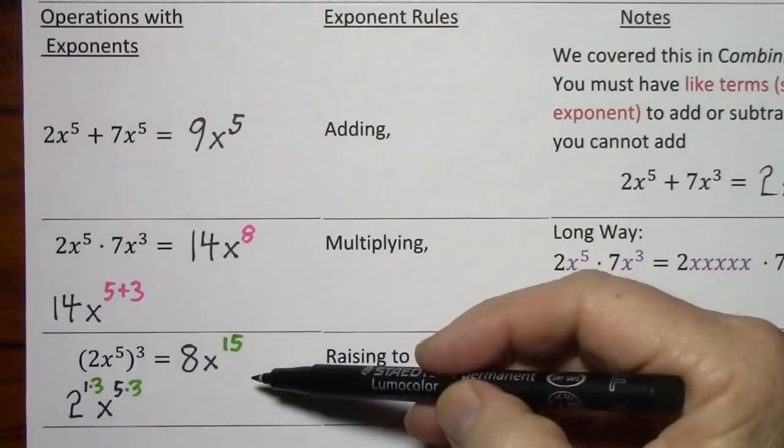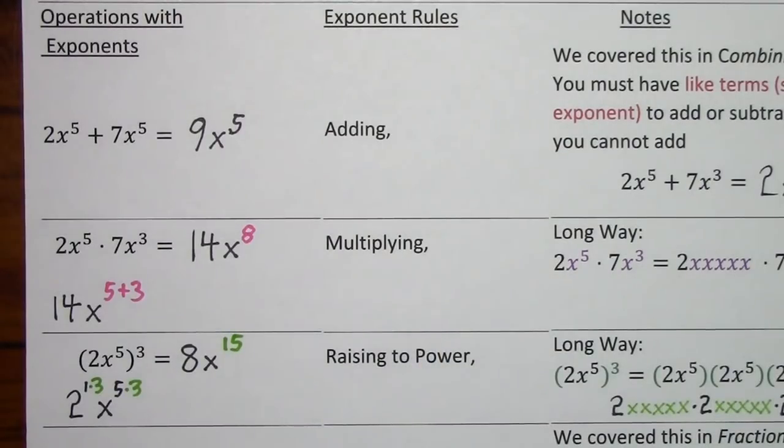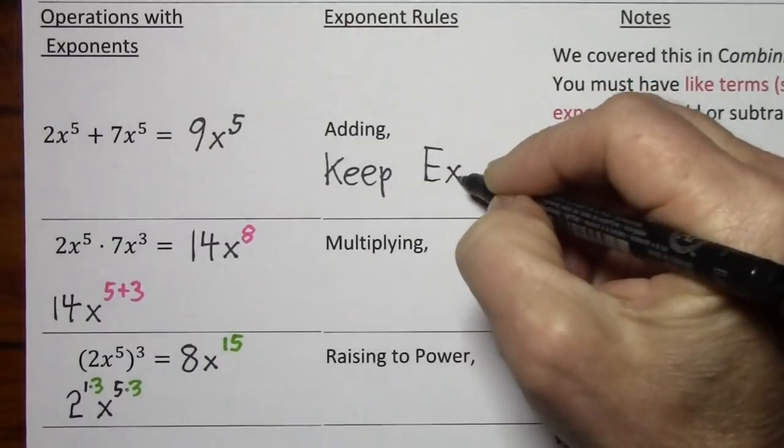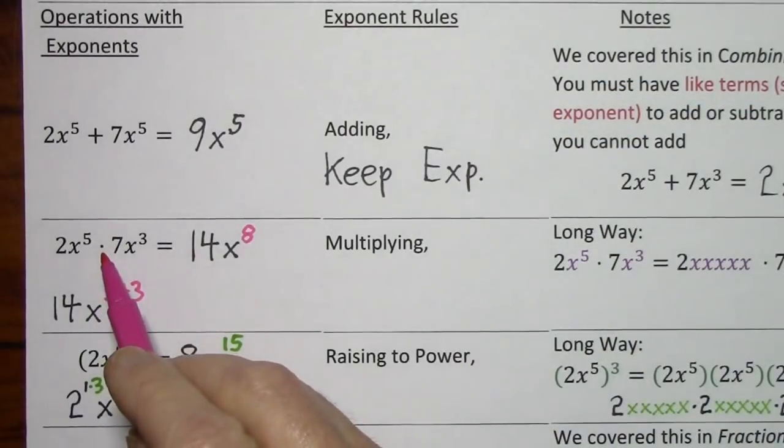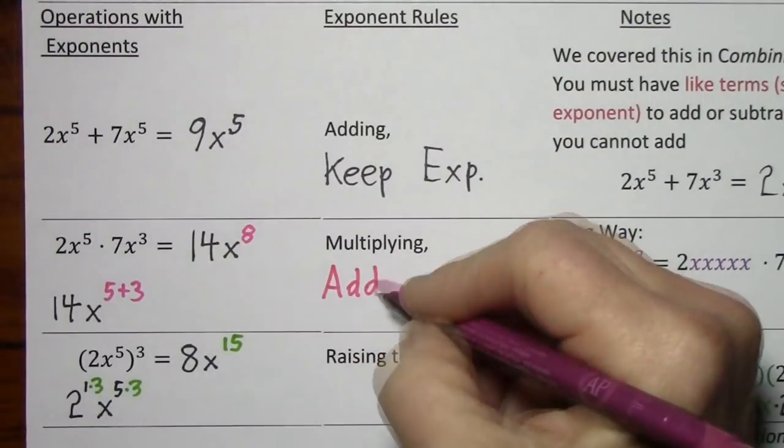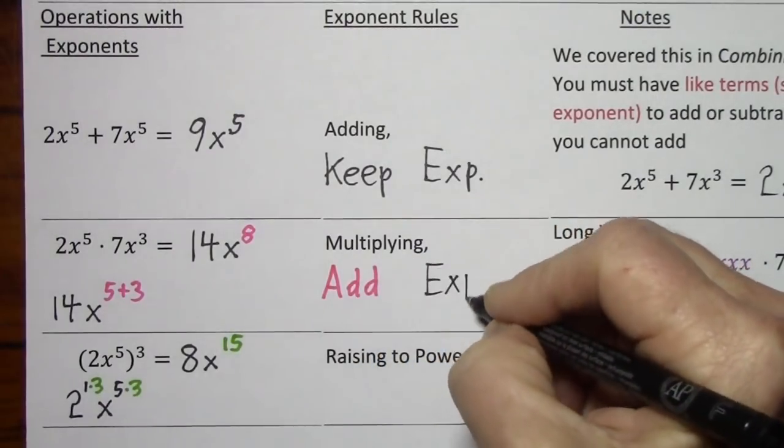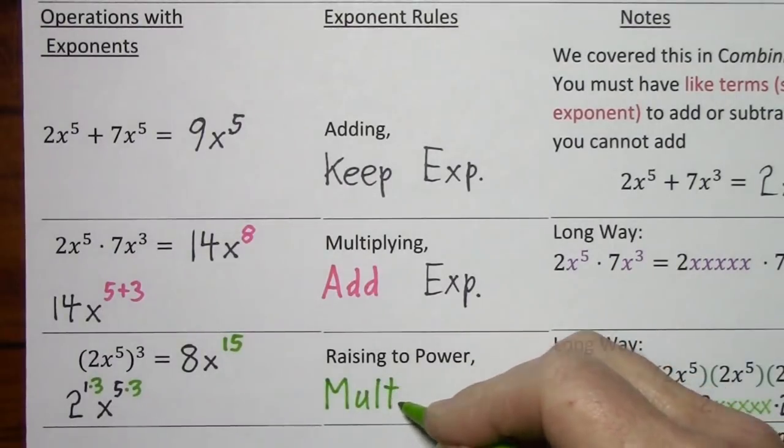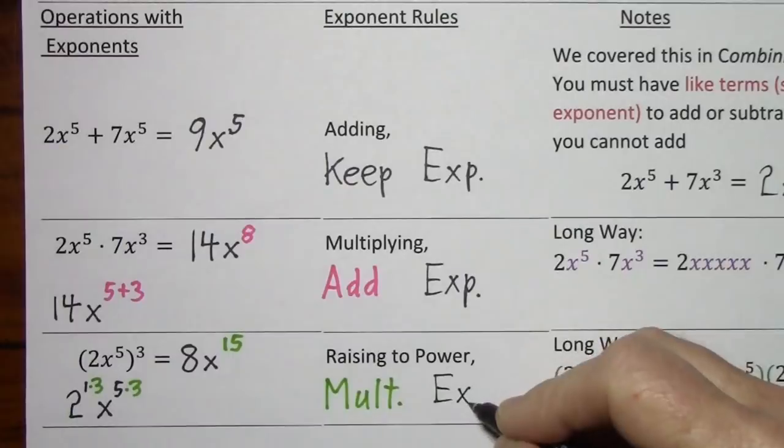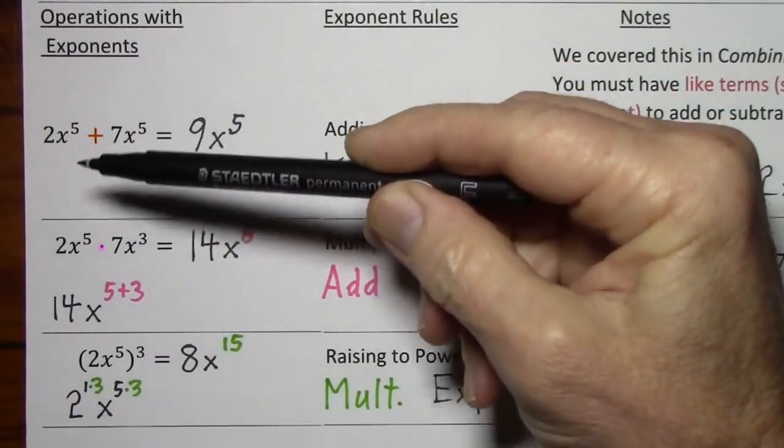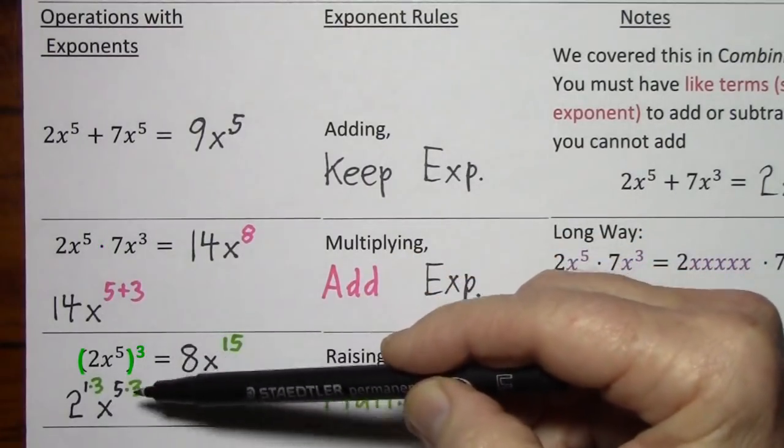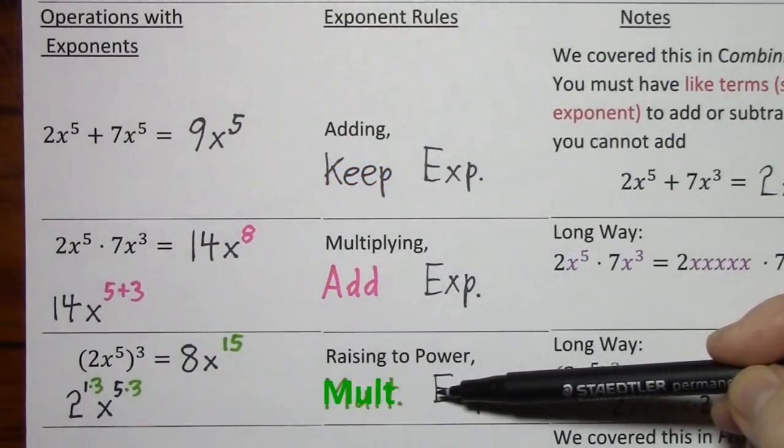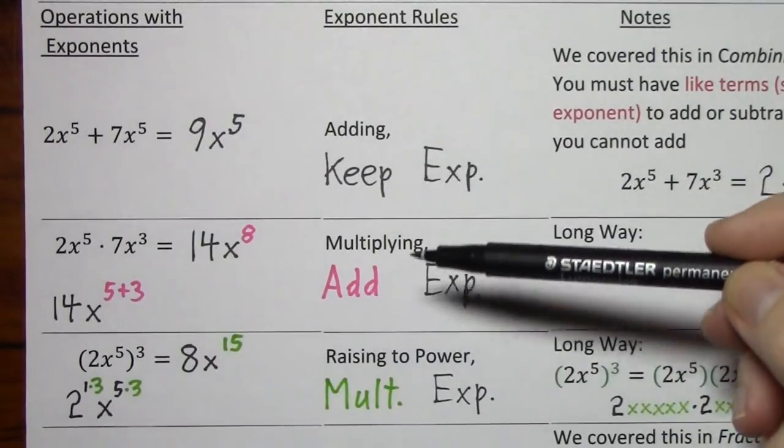I want to go over these first three examples because there's a pattern that's very helpful to notice. When you're adding, you keep the exponent. When you're multiplying, you add the exponent. When you raise to a power, you multiply the exponent. So notice in each case, as we get a little more powerful, so to speak, the operation that we apply to the exponent gets a little more powerful as well. It just sort of lags one step behind.